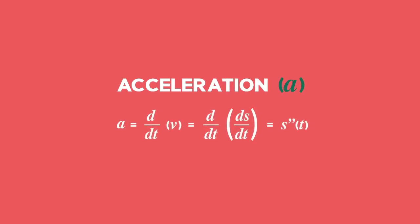A formula for acceleration is found by differentiating the speed or velocity formula, or by finding the second derivative of distance with respect to time.